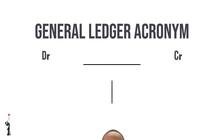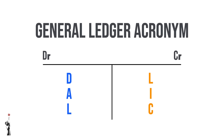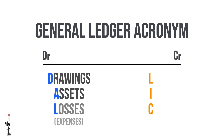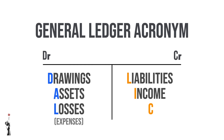We've created an acronym that will help you know where accounts will be recorded on the general ledger. This acronym is called DALIC. On the debit side: D stands for drawings, A stands for assets, and L stands for losses, which are also called expenses. On the credit side: L stands for liabilities, I stands for income, and C stands for capital.